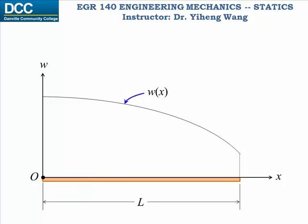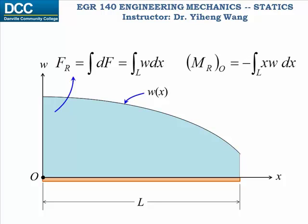Now to find the resultant force of the distributed load, we can integrate dF across the length of the board, and from calculus we know that integration of a function equals to the area under the curve. Also we can integrate dM to find the total moment caused by this distributed load to point O. Note that the negative sign again indicates clockwise rotational effect.